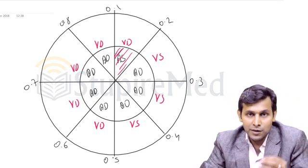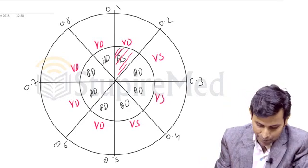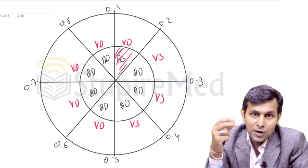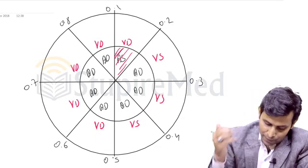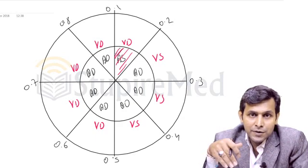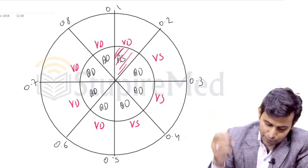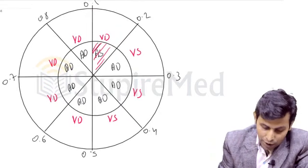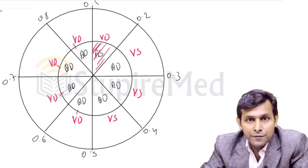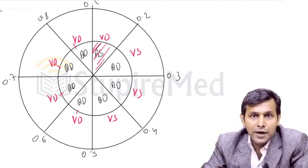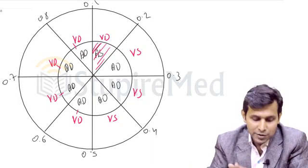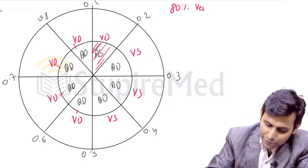A few things can be made very clear with this cardiac cycle diagram. First: how much percentage of ventricular filling occurs passively? If you read the diagram properly, you will be able to answer. As we can see, the atrial diastole and ventricular diastole are common at four places out of five phases of ventricular diastole. This means both chambers — ventricle and atria — are relaxing but blood is still flowing. So 80% of ventricular filling is passive.